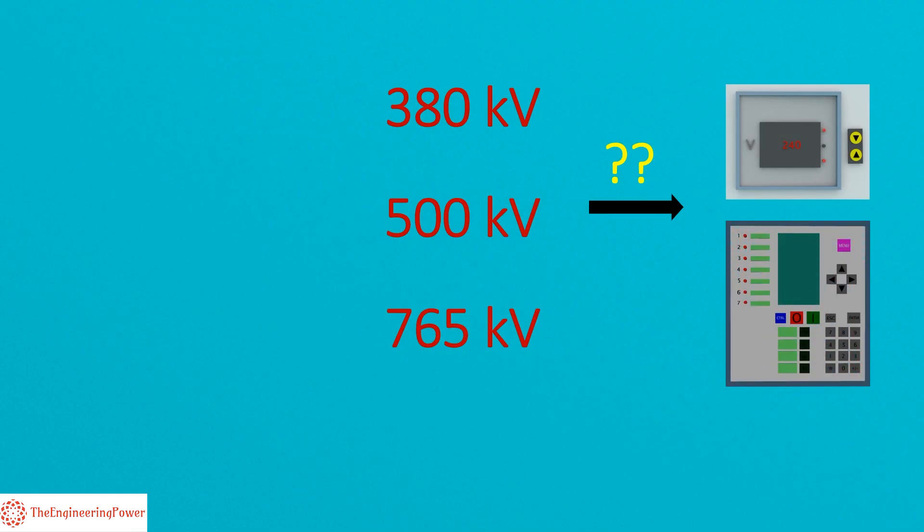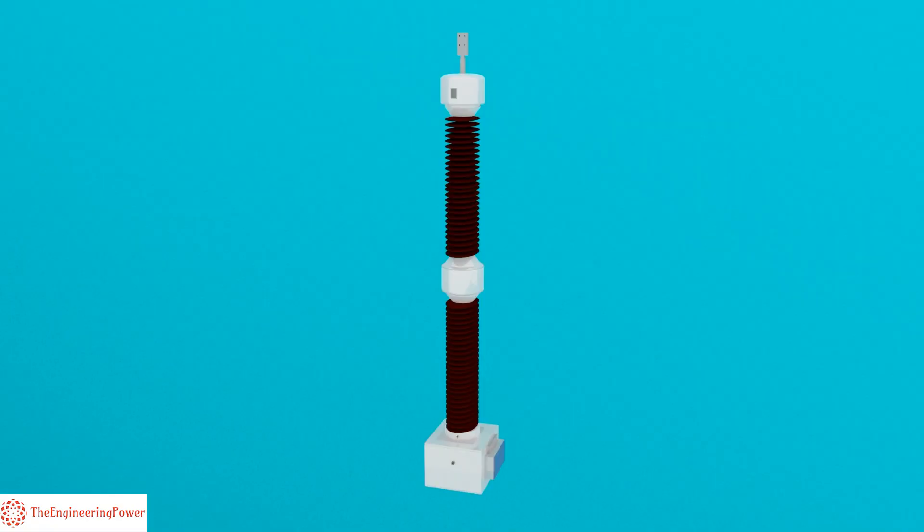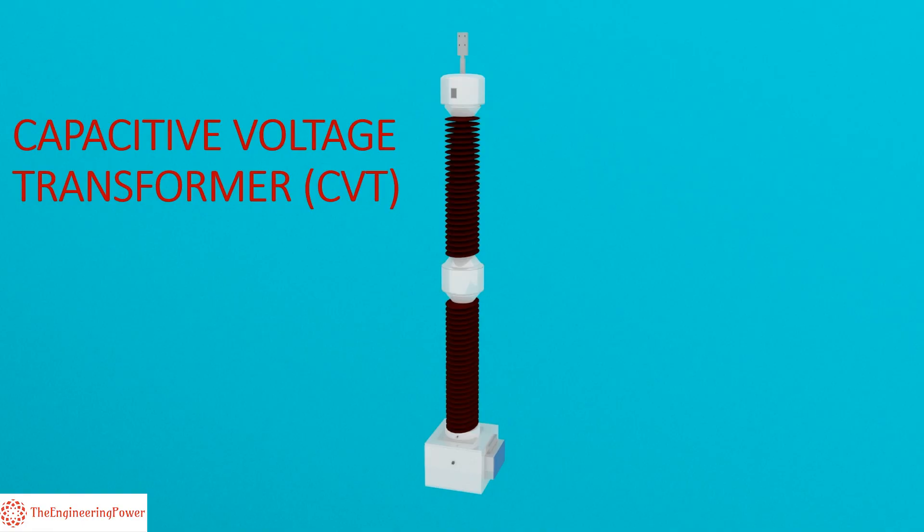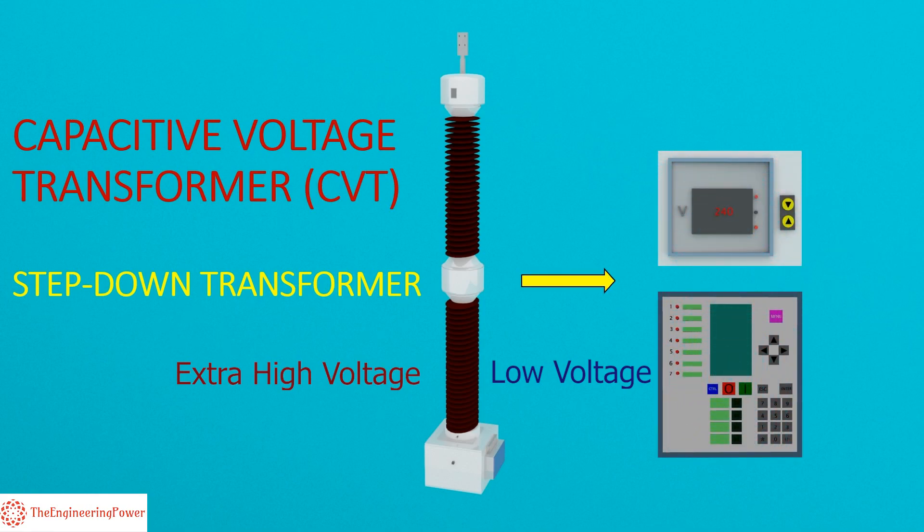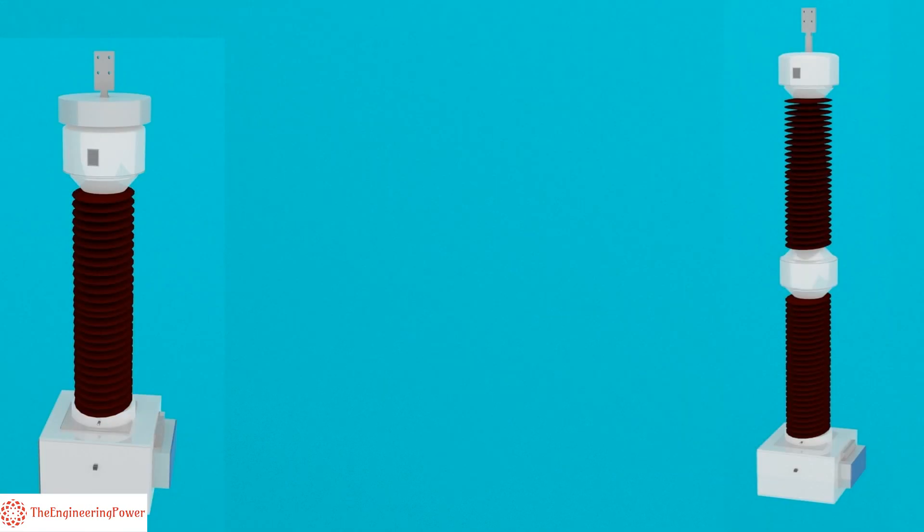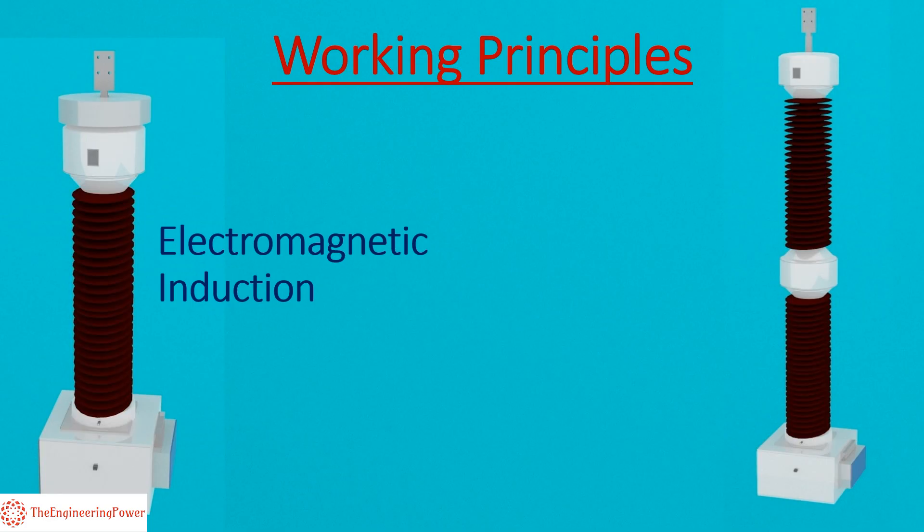The answer is Capacitive Voltage Transformer or simply CVT. Similar to a potential transformer, capacitive voltage transformer is also a step-down transformer. It transforms the extra high voltages to a safer lower voltage that can then be fed to relays and meters. The basic difference between a PT and CVT is their working principle. PT works on the principle of electromagnetic induction, whereas the working of CVT is based on the principle of voltage division and electromagnetic induction.